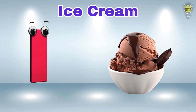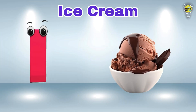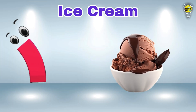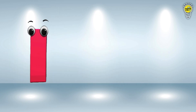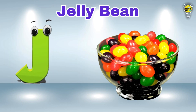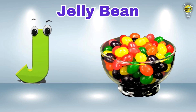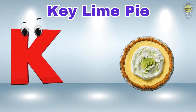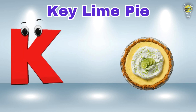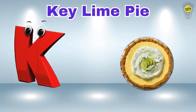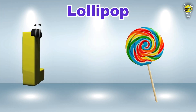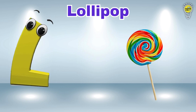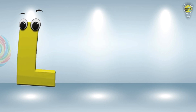I is for Ice Cream. I, I, Ice Cream. J is for Jelly Bean. J, J, Jelly Bean. K is for Key Lime Pie. K, K, Key Lime Pie. L is for Lollipop. L, L, Lollipop.